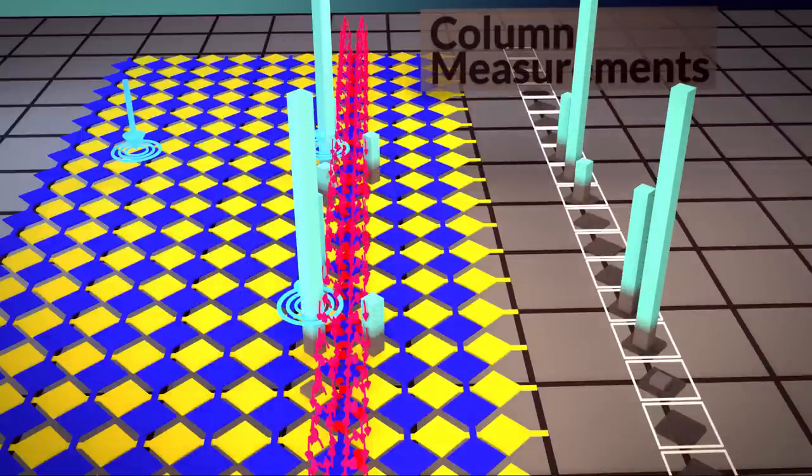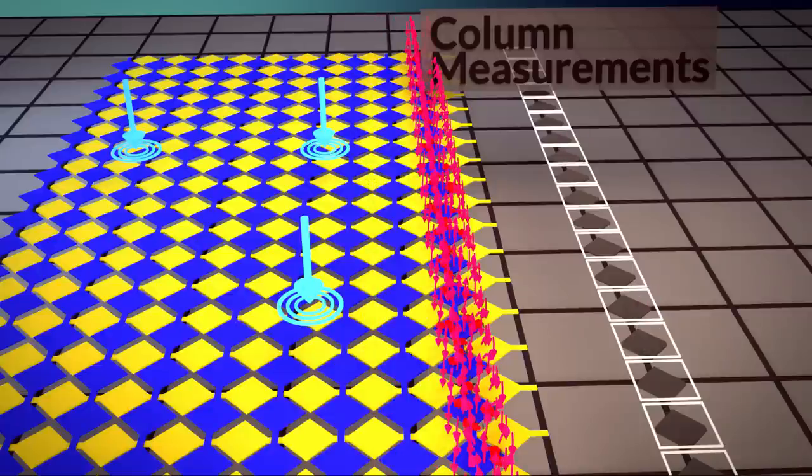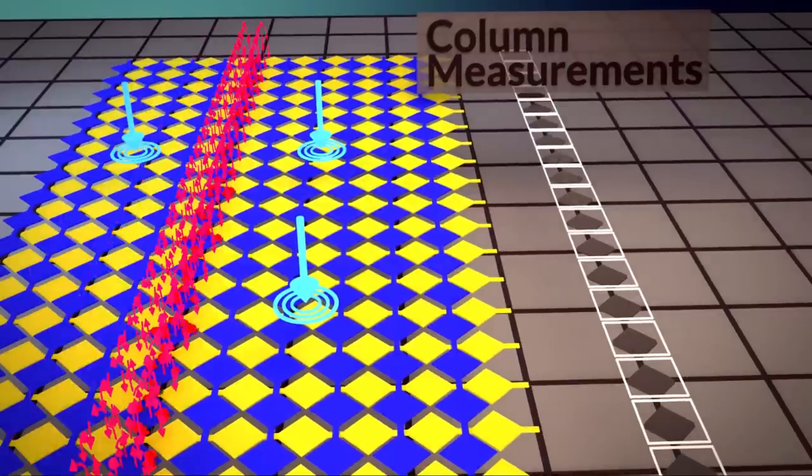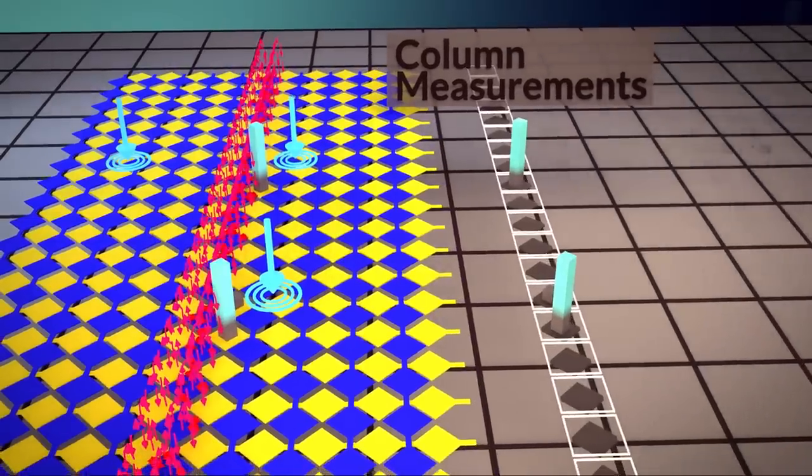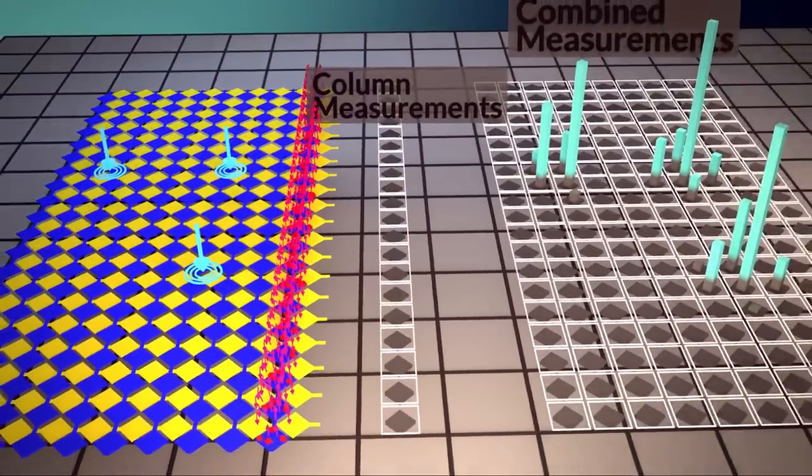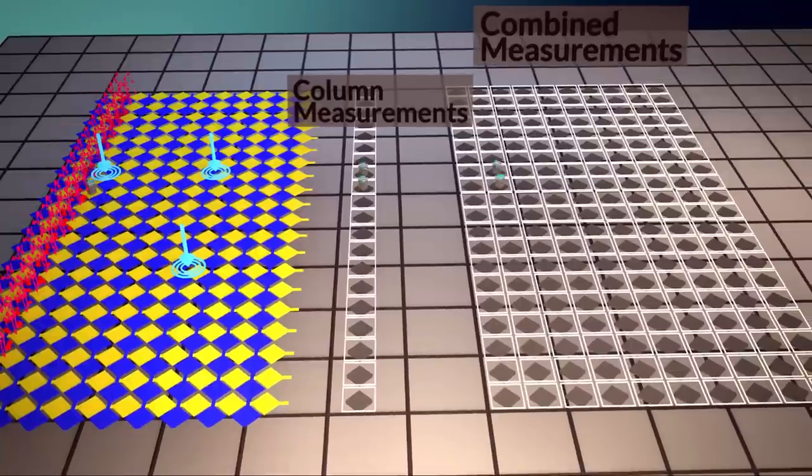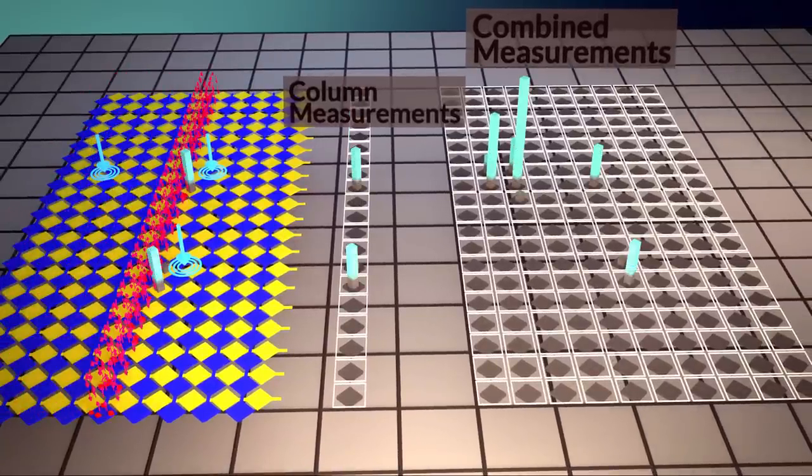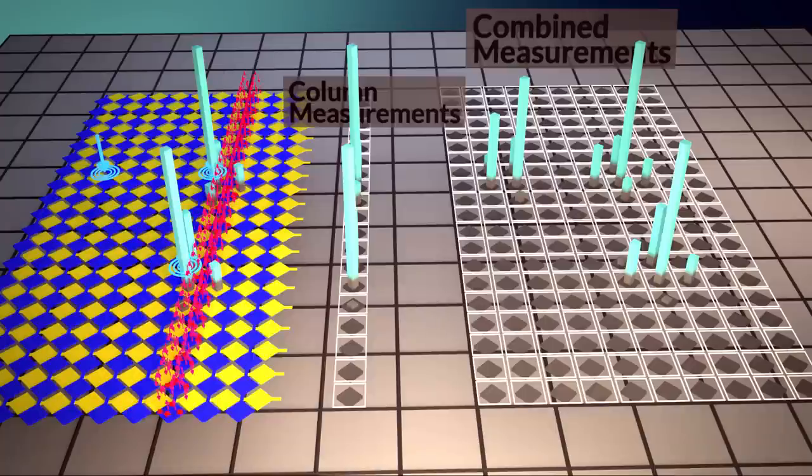Before the electric field moves to the next row, each column resets its measurement. The smartphone then correlates when the row was active with the output of each column in order to reconstruct a complete grid. This scanning happens within a couple milliseconds, and it allows for the smartphone to distinguish between three or more touches in all different locations.